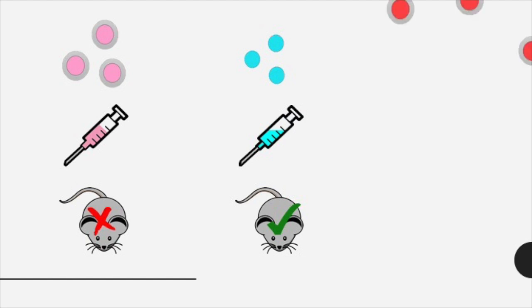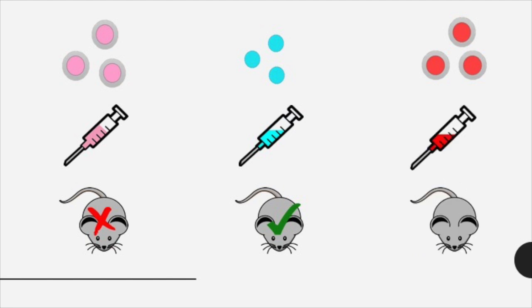Griffith then took the virulent form and killed it by heating it up really high. When the heat killed smooth strain is injected it is harmless and the mouse also lives.